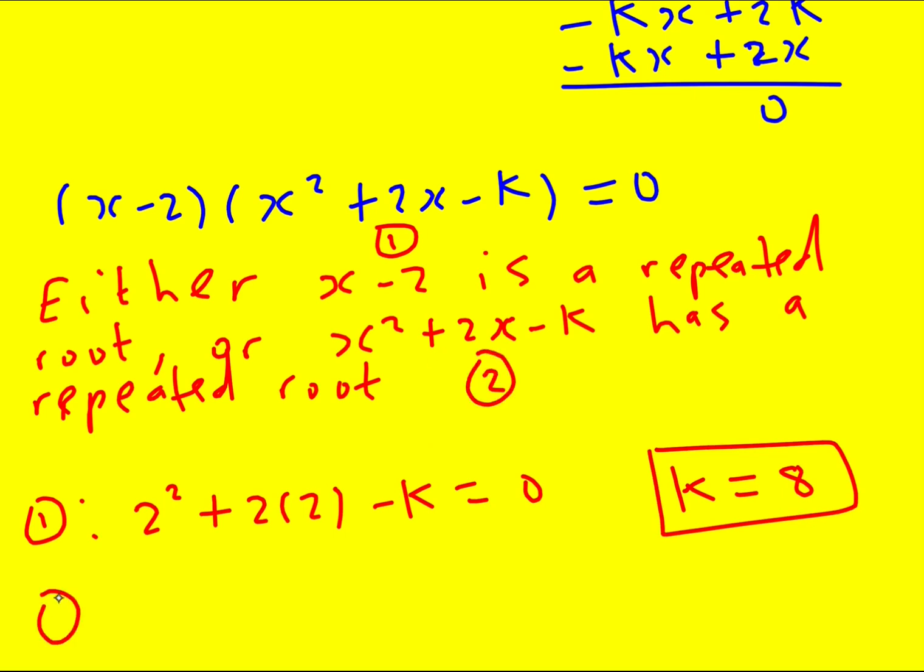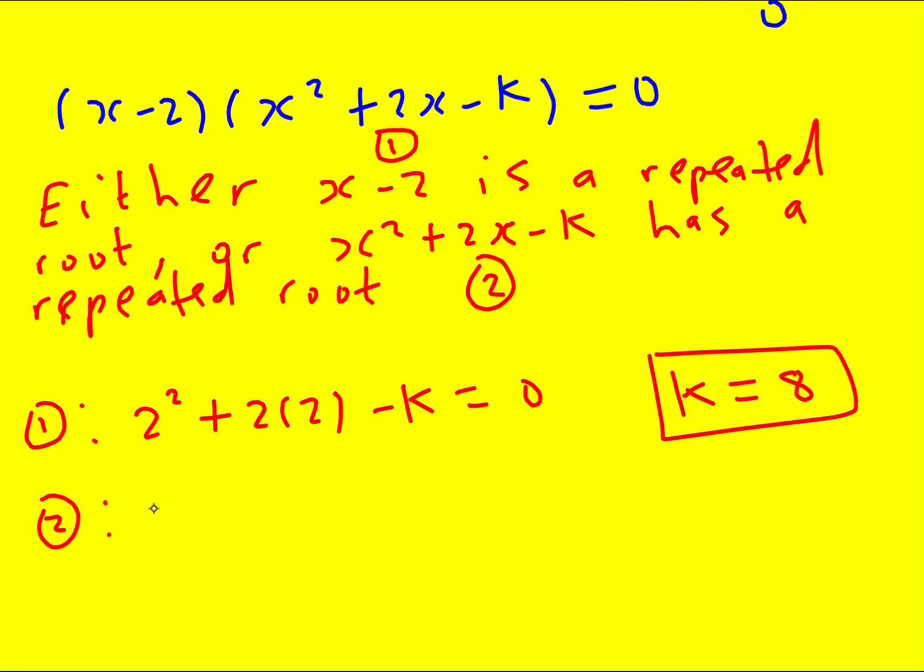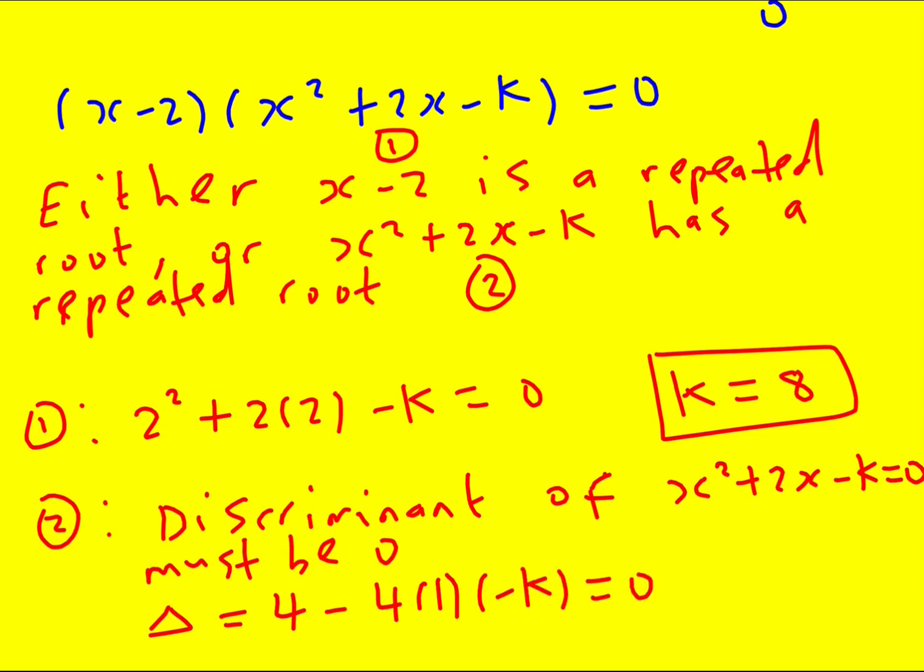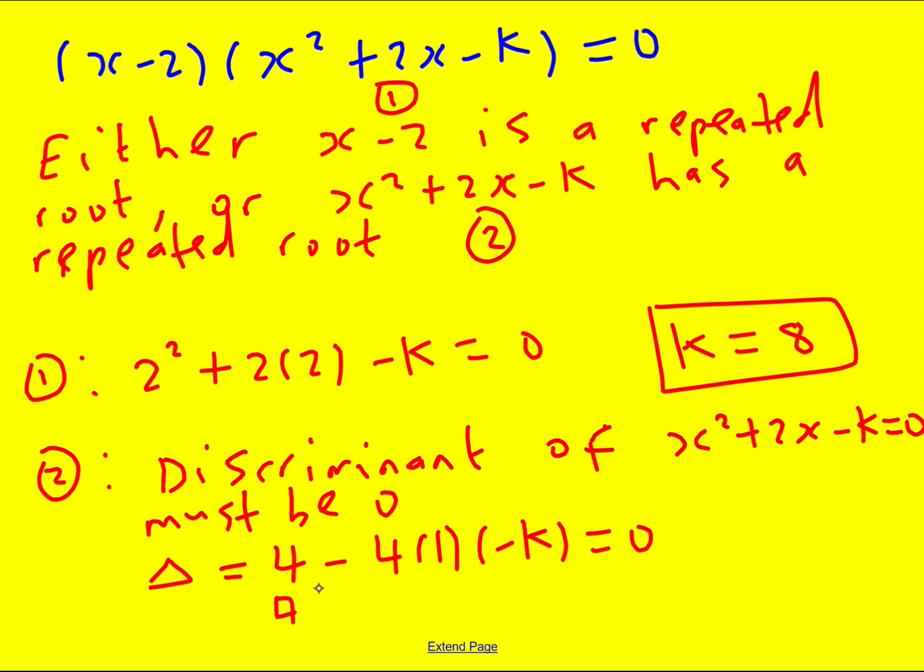And the second scenario: the discriminant of x² + 2x - k must be 0. So it's going to be b² which is 4 minus 4ac. So 4 + 4k equals 0, so k must equal -1.